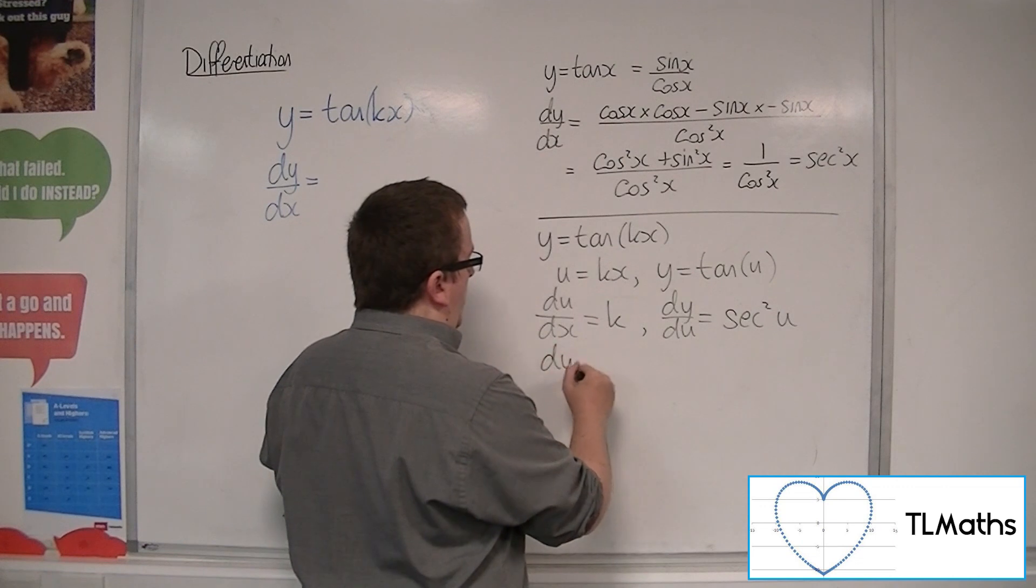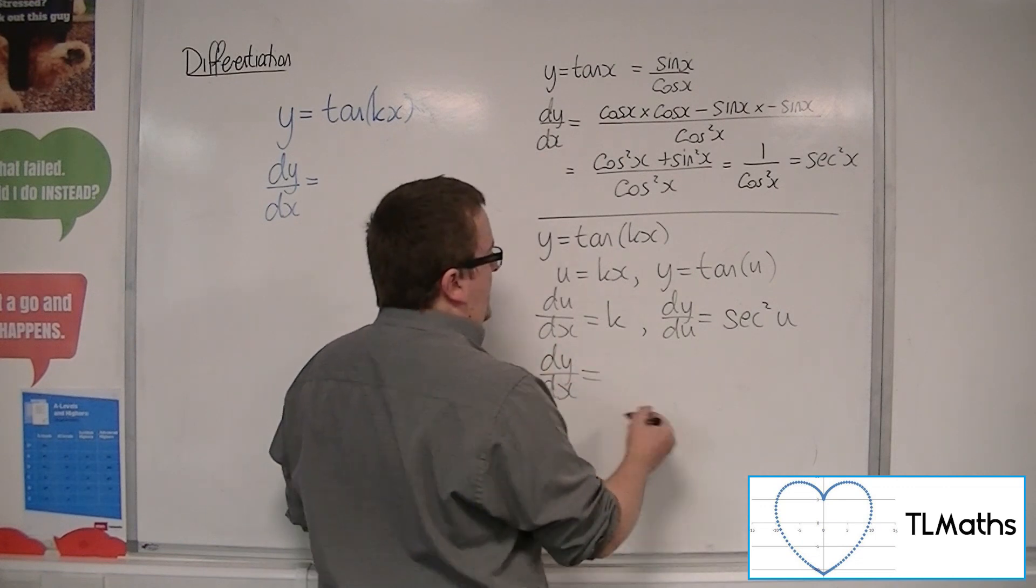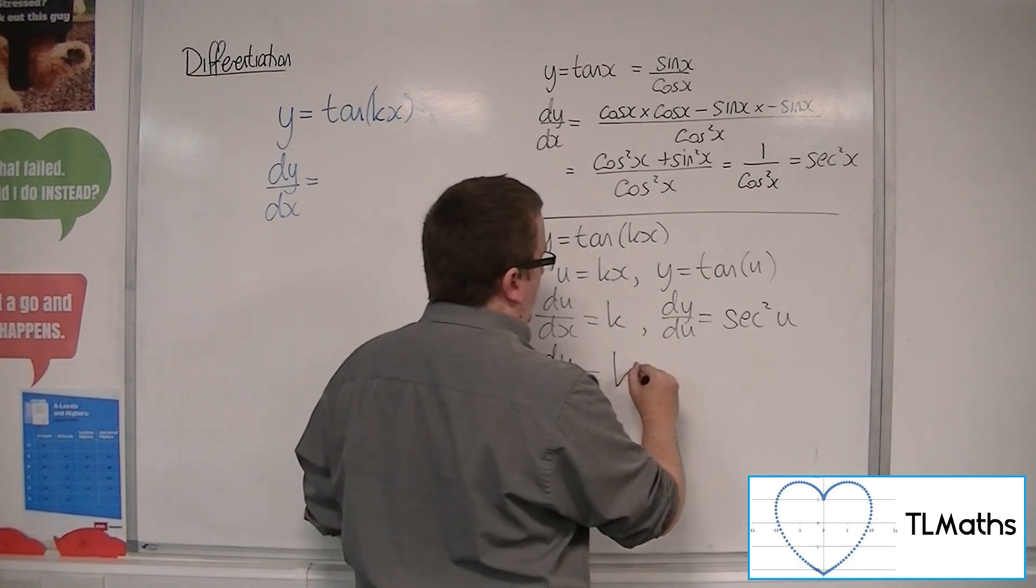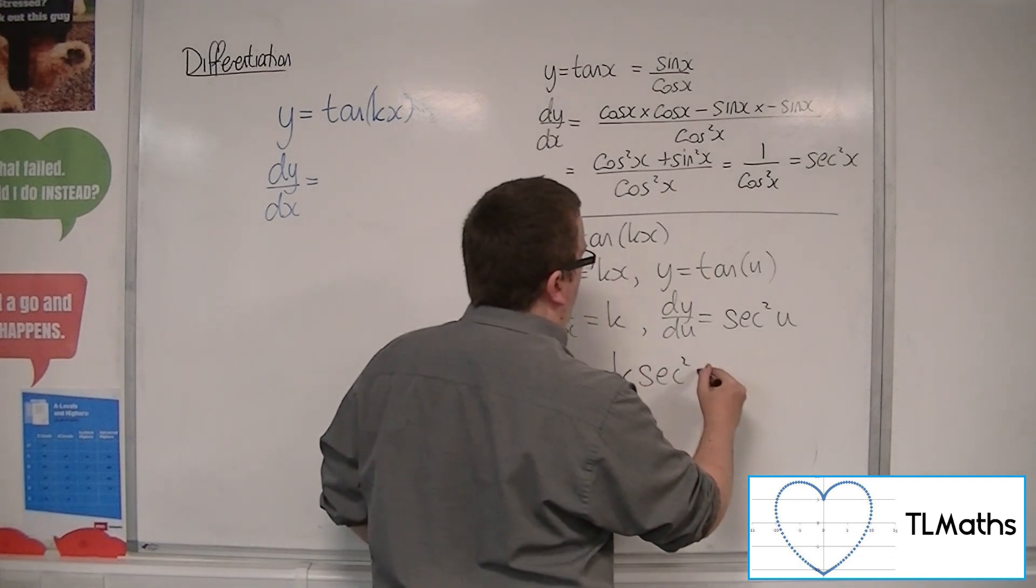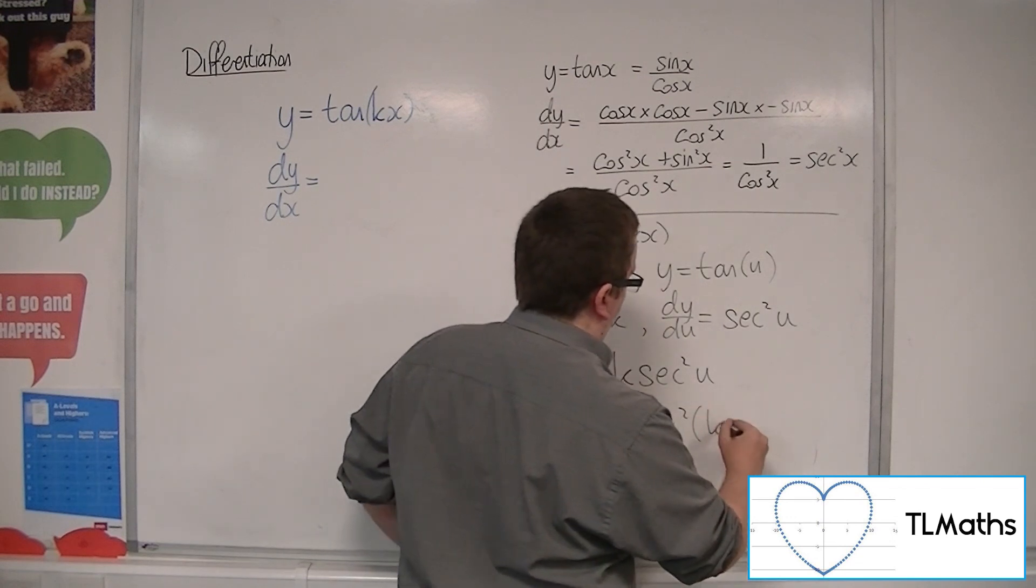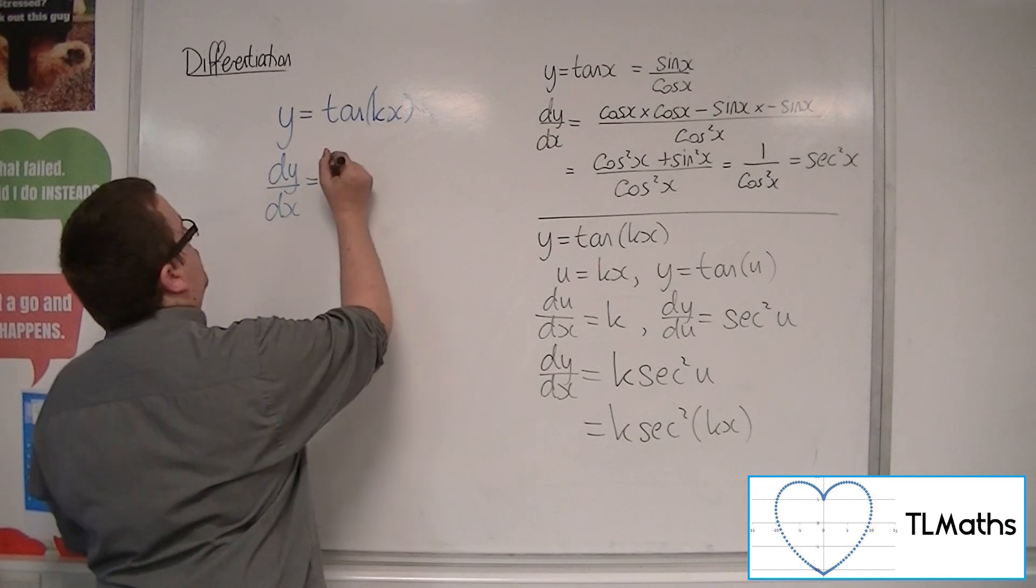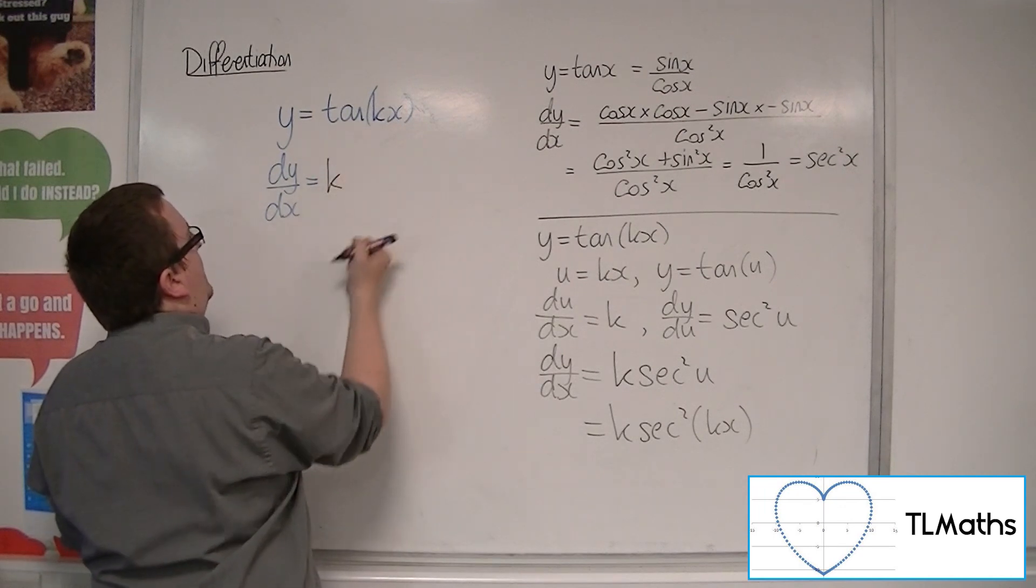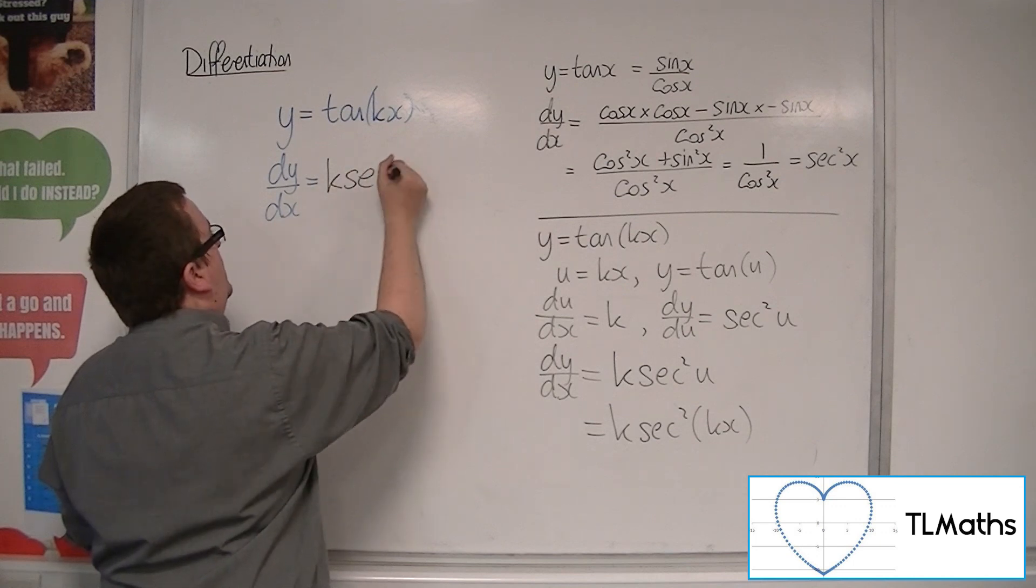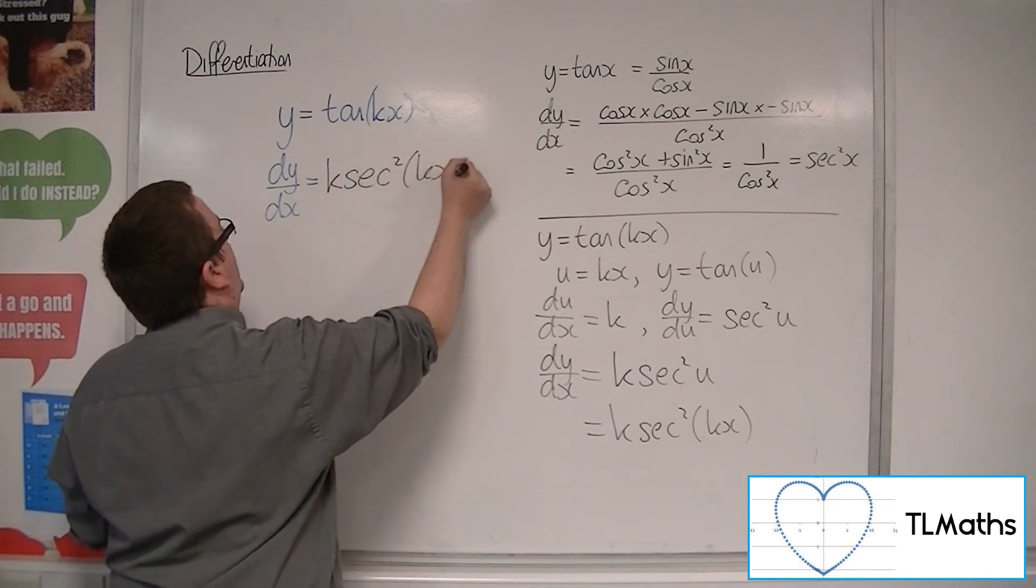So dy by dx is equal to dy by du times du by dx. So k sec squared u, and u was kx. And so that proves that tan kx differentiates to k sec squared kx.